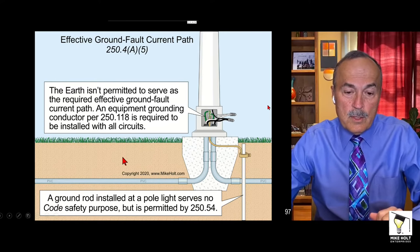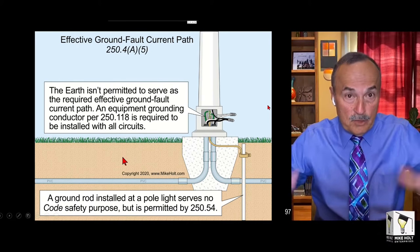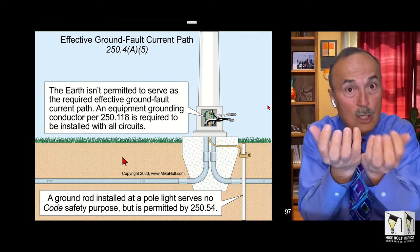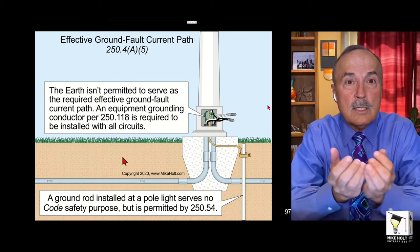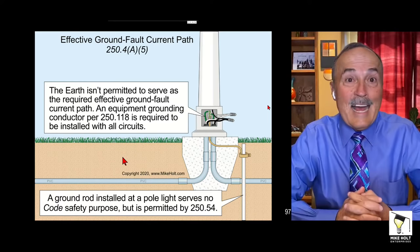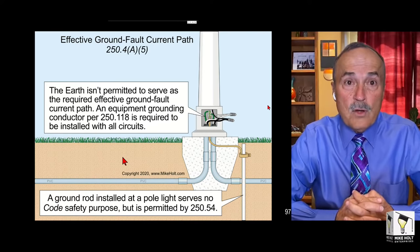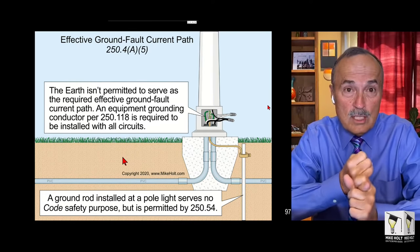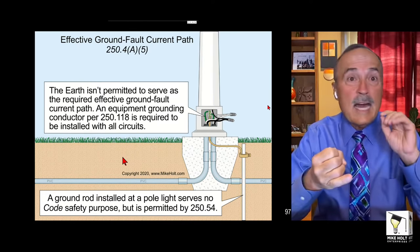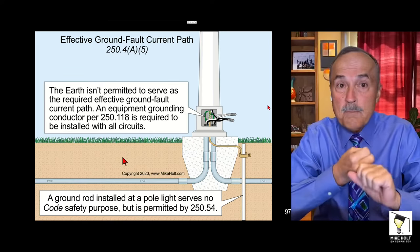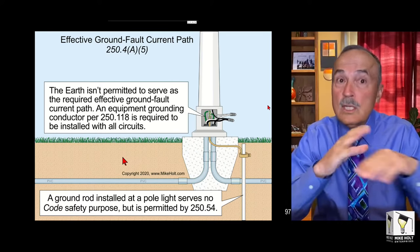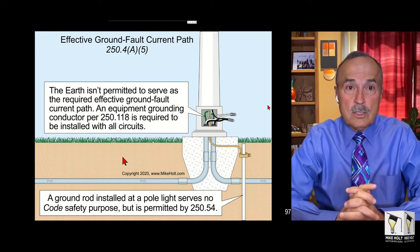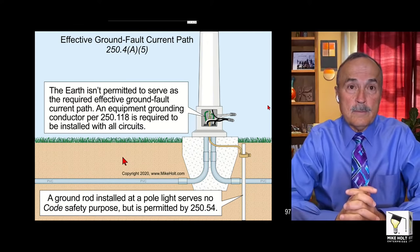Now, the earth - the dirt itself - just dirt. Go outside, pick up some dirt, look at that dirt. That is not an effective ground fault current path. It's not intentionally constructed, and it's not a low impedance path back to the source. So we can never use the dirt to clear a fault.